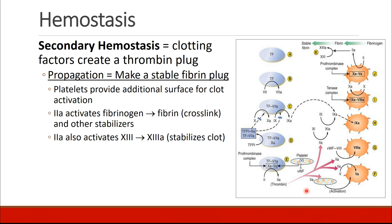Then we have propagation, which is making a stable fibrin plug. The platelets are the infrastructure — they're the surface for clot activation. Factor 2a, that's thrombin, activates fibrinogen, which makes fibrin. Fibrin is a matrix that crosslinks and is stabilized to make the clot. Fibrin also activates factor 13 to 13a, and this further stabilizes the clot. All of this is shown graphically in the diagram on the right.